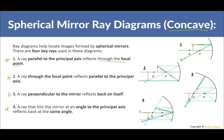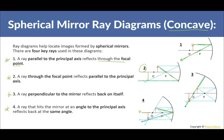Wherever the rays converge, that's where the image will be. You only need two rays because after drawing two, you've already found the image location. The other two are just additional options you can use.